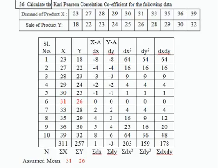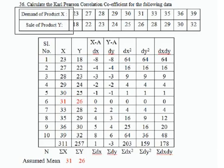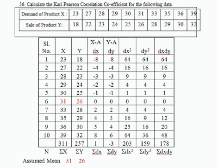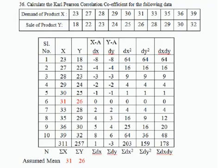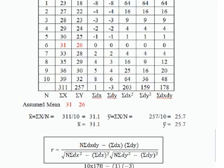Part B, question number 36: calculate the Karl Pearson correlation coefficient for the following data, where X is the demand of product and Y is the sale of product. Using the assumed mean deviation method, the formula is: r equals n·Σdx·dy minus Σdx·Σdy, all divided by the square root of (n·Σdx² minus (Σdx)²) multiplied by the square root of (n·Σdy² minus (Σdy)²).